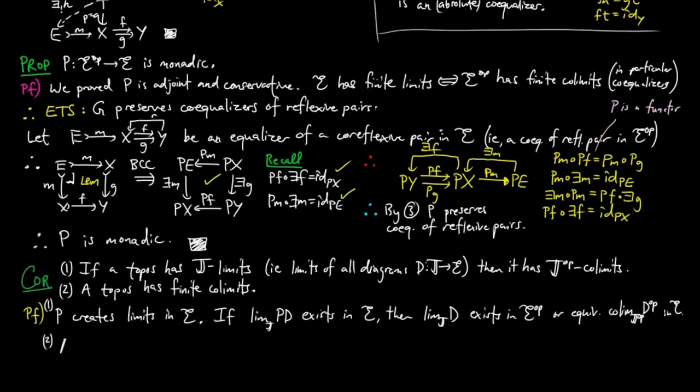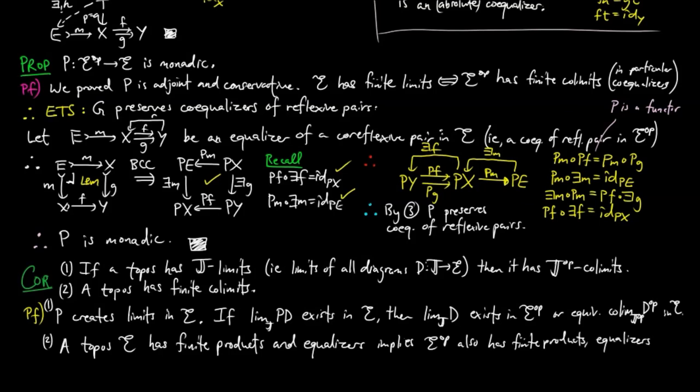Then we have a topos E has finite products and equalizers, implies the dual of E has finite products and equalizers. And so E has finite co-products and co-equalizers, since these are dual concepts, giving us E has finite co-limits.